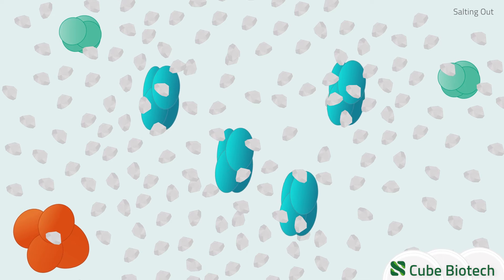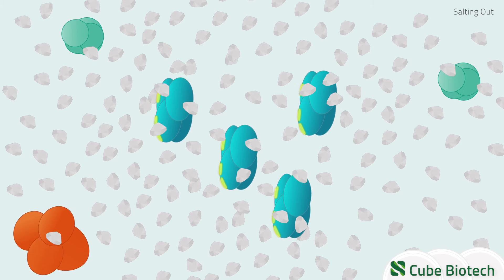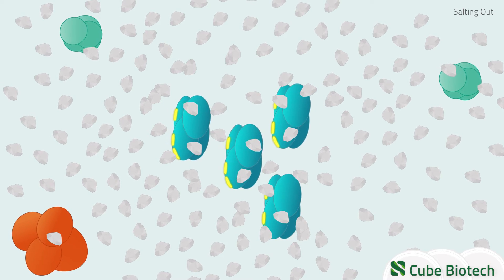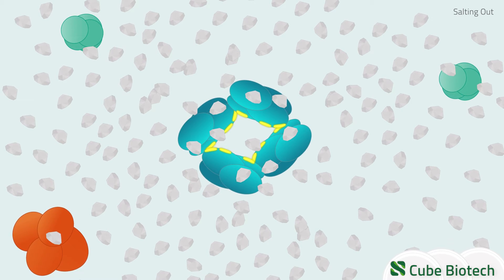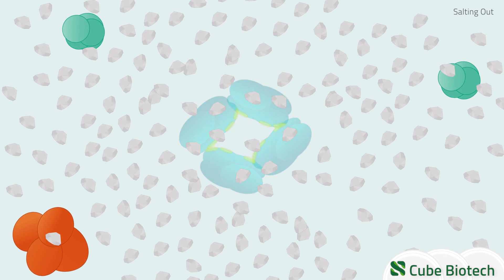When enough salt is added to the solution, the protein-protein interactions become stronger than the interactions between the hydrophilic parts and the hydration shell. To become more stable, the protein molecules associate through hydrophobic interactions. The precipitated protein can then be removed from the target protein solution.